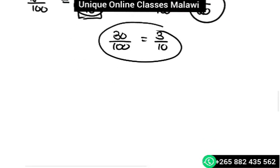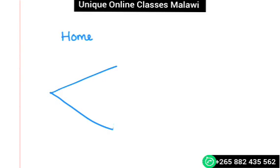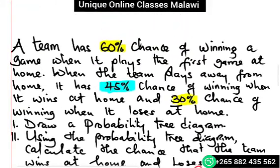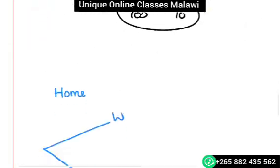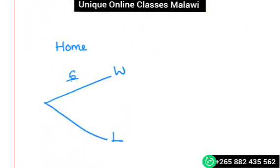Let's now draw the tree diagram. So we have home and away. We have two branches there. We have winning and losing. Winning at home is 60 percent, which is 6 over 10. Losing at home is 4 over 10. Remember the sum of the probabilities is one.